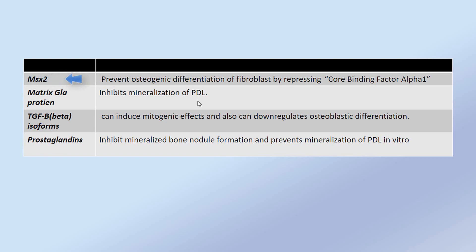MSX2 protein prevents osteogenic differentiation of fibroblasts by repressing core binding factor alpha-1. Matrix GLA protein directly inhibits mineralization in the periodontal ligament. TGF beta isoforms induce mitogenic effects and can also down-regulate osteoblastic differentiation. Prostaglandins inhibit mineralized bone nodule formation and prevent mineralization of the periodontal ligament in vitro.